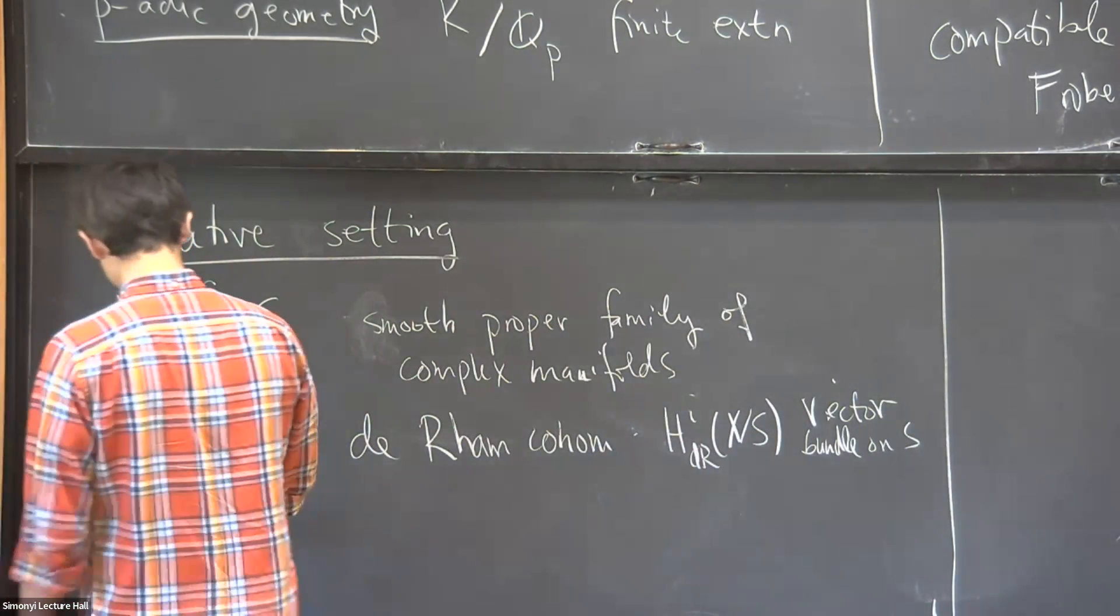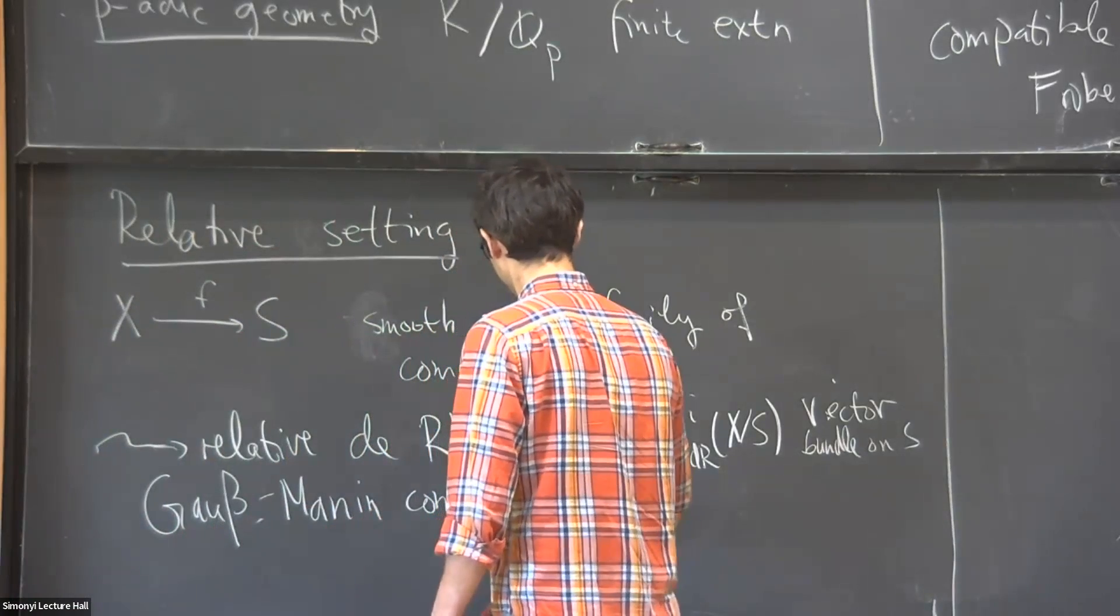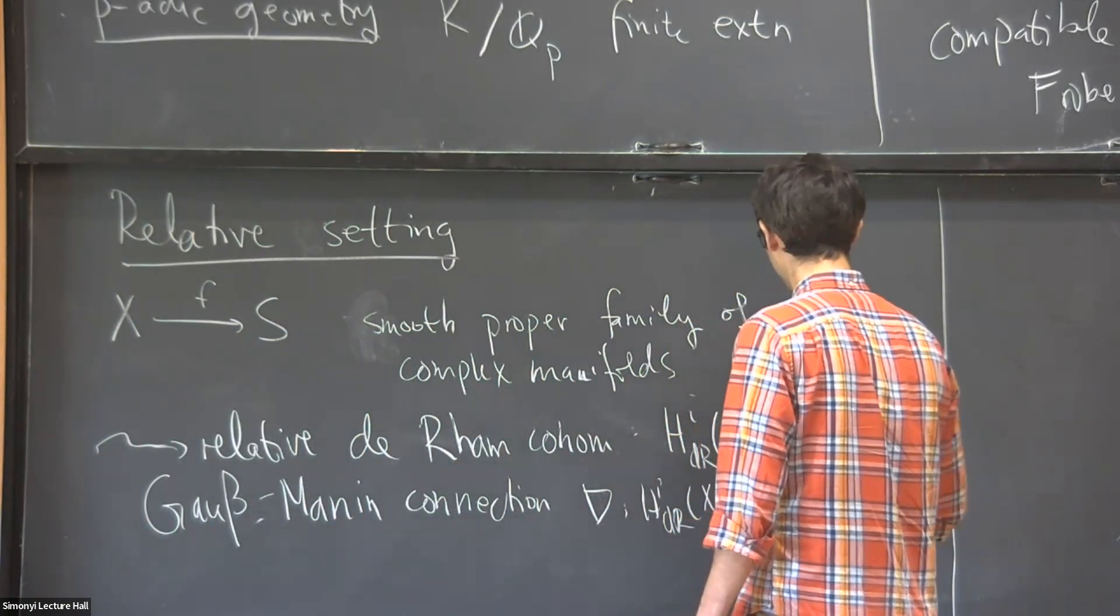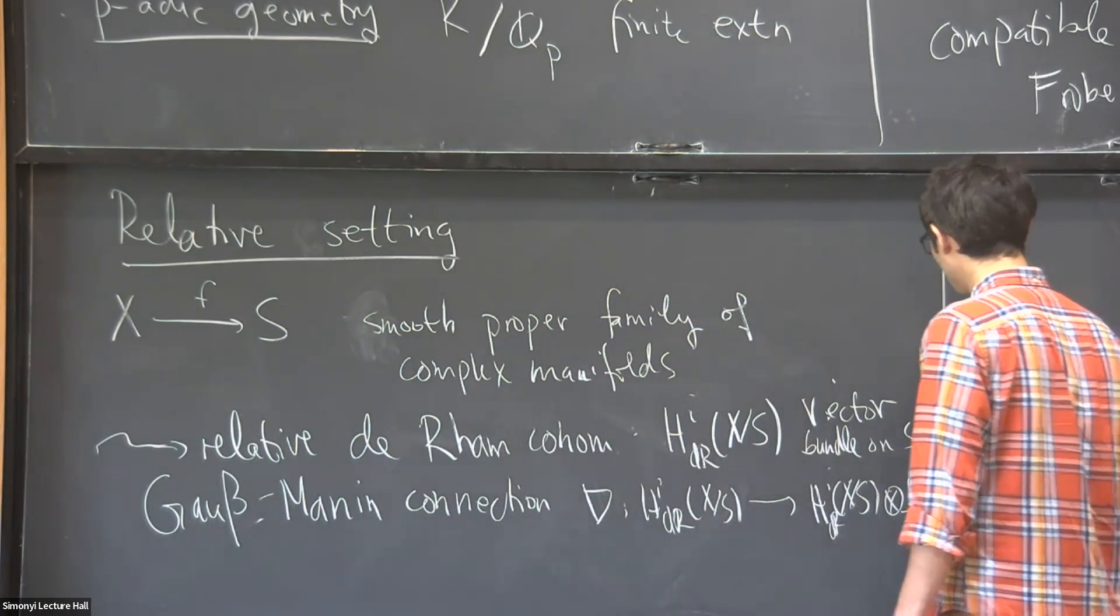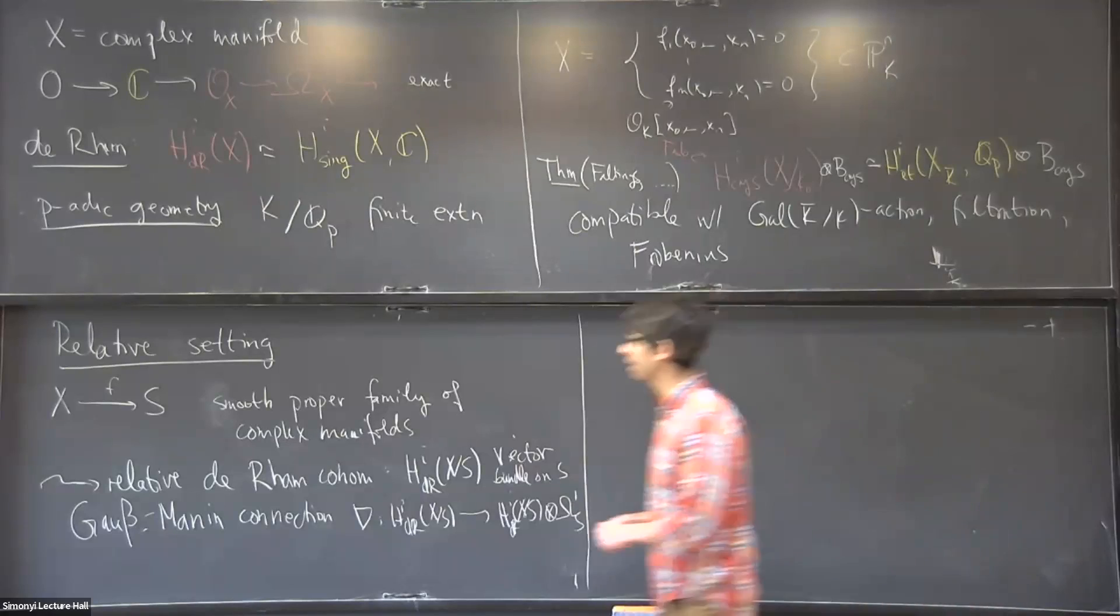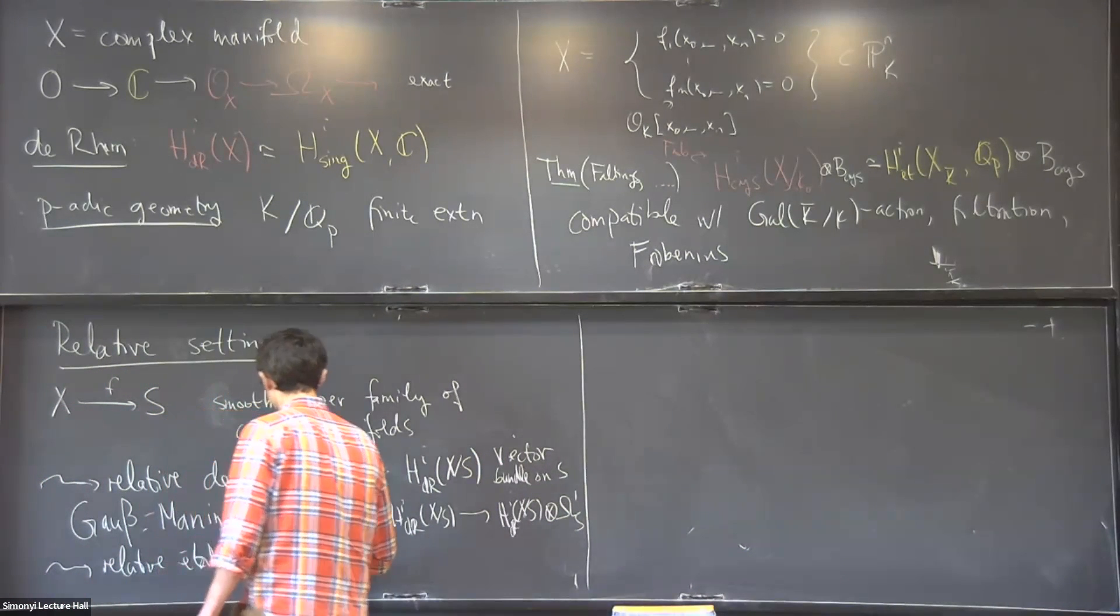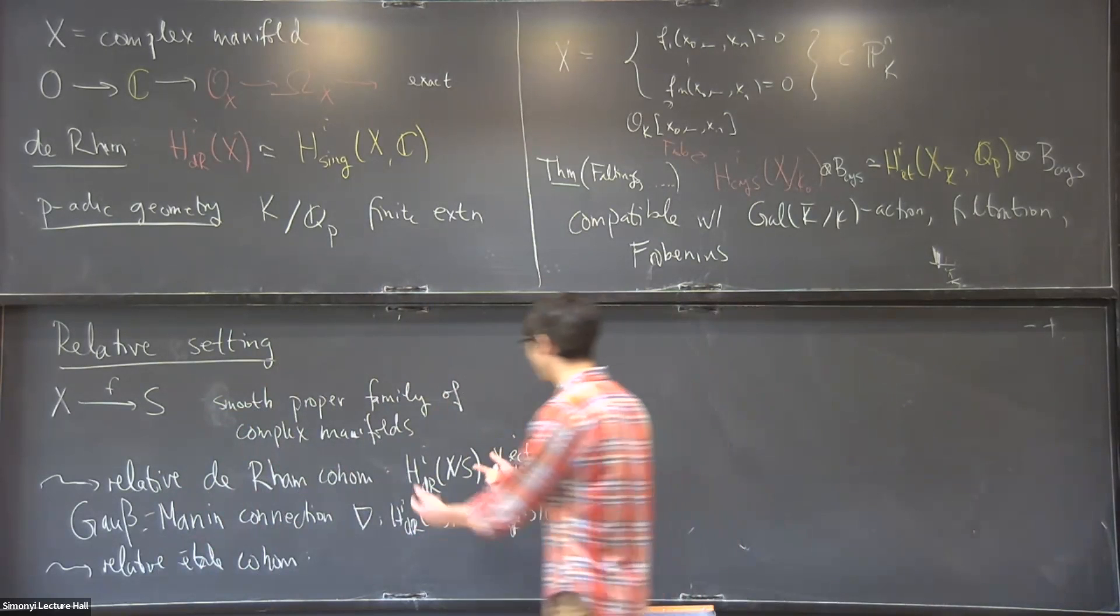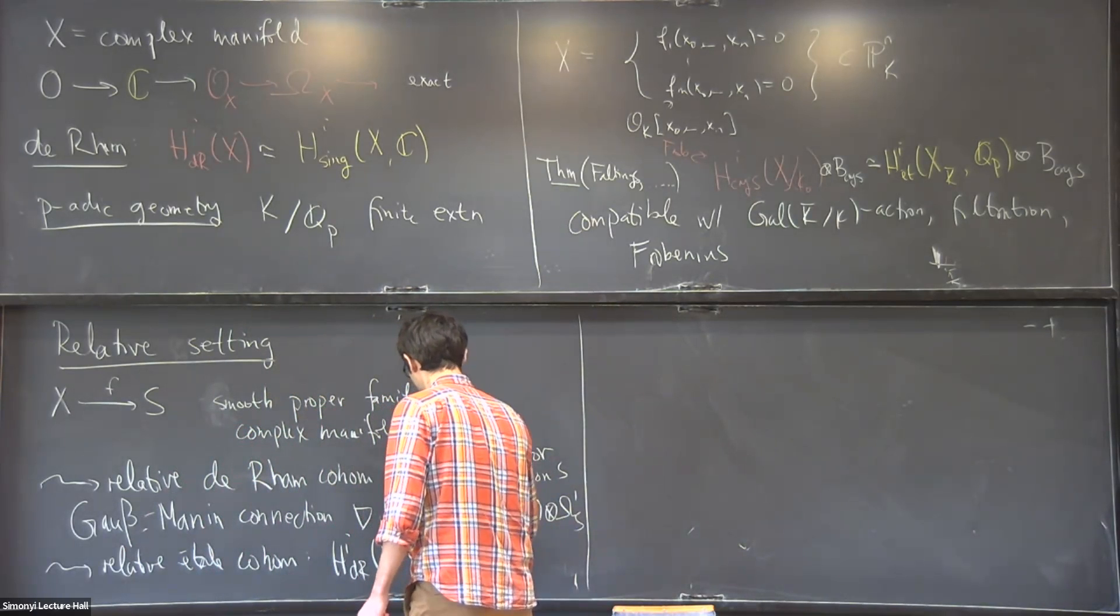And for this one is to look at a connection called the Gauss-Manin connection. So this is a map, a C-linear map from this vector bundle to the vector bundle tensored with the differential forms. And we should think of this as some sort of set of partial differential equations. And it turns out that the relative de Rham cohomology is exactly the set of those sections of the vector bundle that satisfy these partial differential equations, so the flat sections.